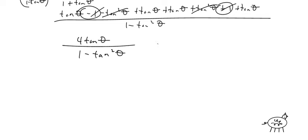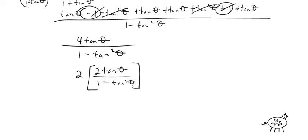I can factor out a 2, giving 2 times 2 tangent of theta over 1 minus tangent squared of theta. That's the double angle identity for tangent, so it equals 2 tangent of 2 theta equals 2 tangent of 2 theta.